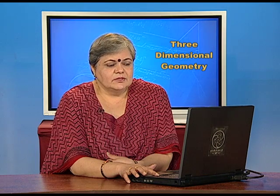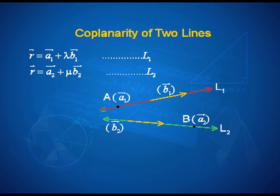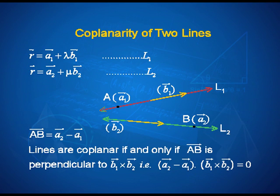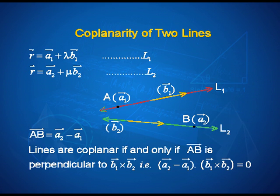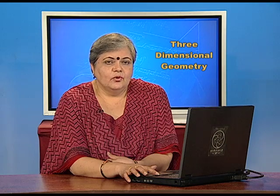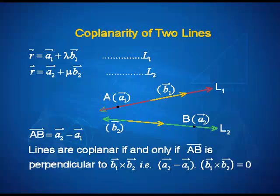Knowing that line l1 passes through A and line l2 passes through B, if I can show that the vector AB — which is nothing but a2 − a1 — is perpendicular to b1 × b2, that will let us conclude that the lines are coplanar. Because b1 × b2, which is perpendicular to b1 and b2, is also now perpendicular to vector AB. Therefore, the two lines l1 and l2 must be in the same plane. That is exactly the condition for coplanarity: (a2 − a1)·(b1 × b2) = 0 implies the two lines are coplanar.